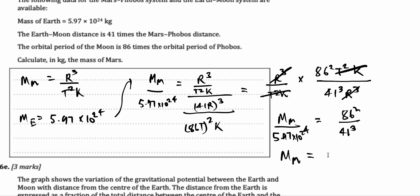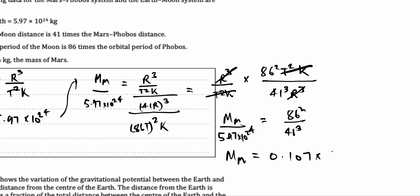So, mass of Mars is equal to, let's put this on our calculators to get 86 square over 41 cubed is equal to 0.107 and this times the mass of the Earth, which we got earlier, 5.97 into 10 to the power of 24. We get the mass of Mars is equal to 6.4 into 10 to the power of 23 kilograms. And that's our answer.